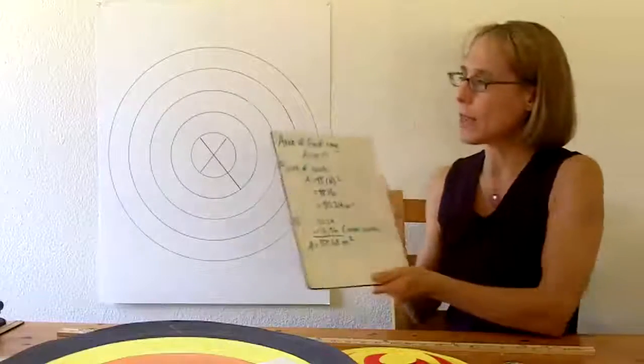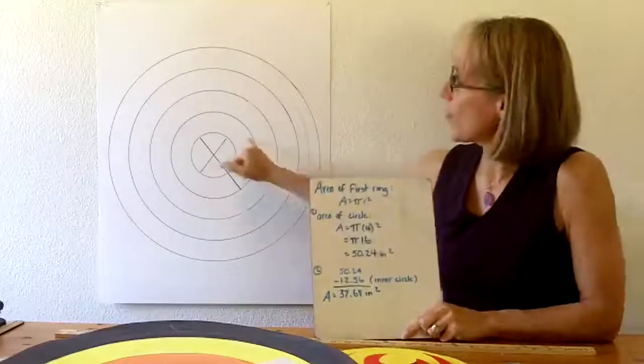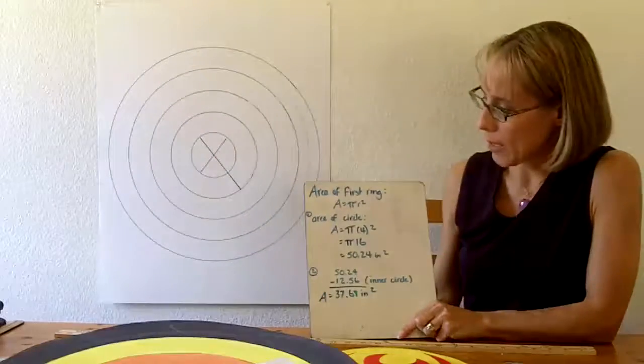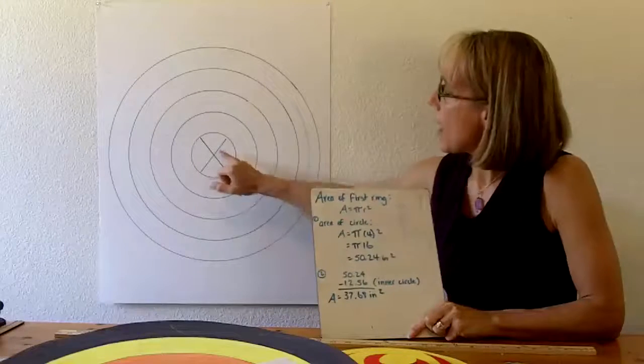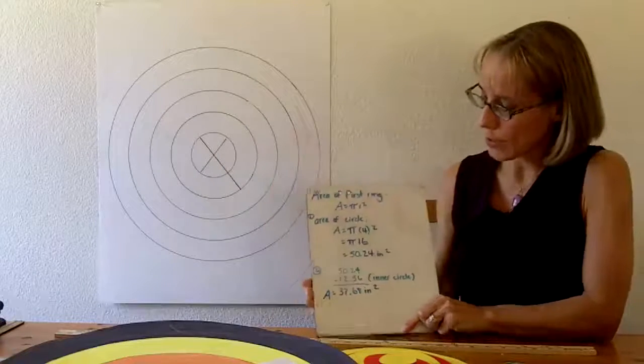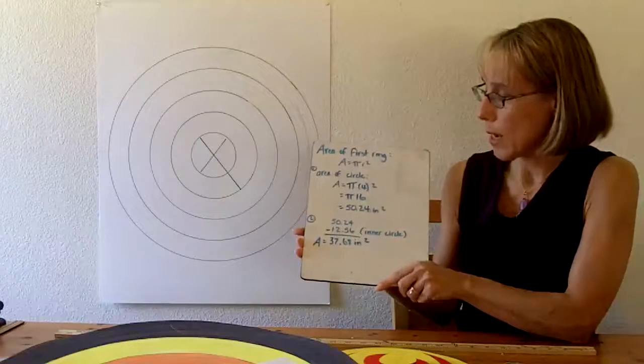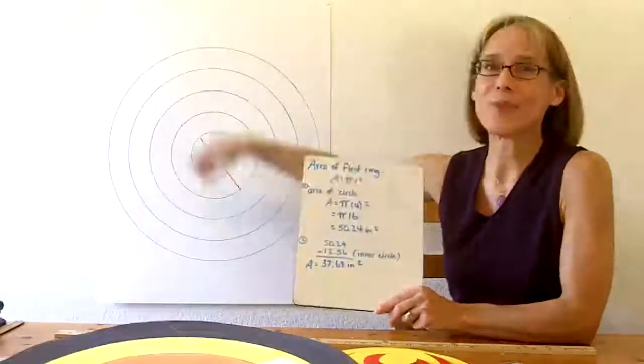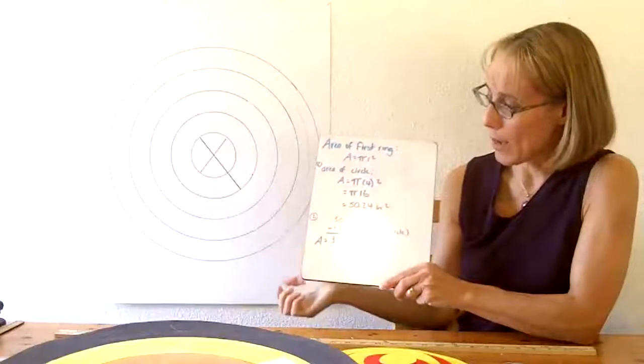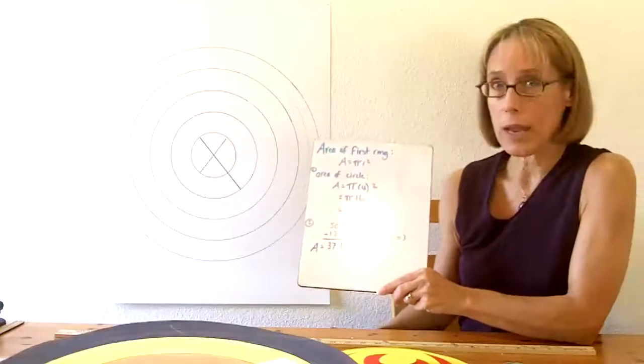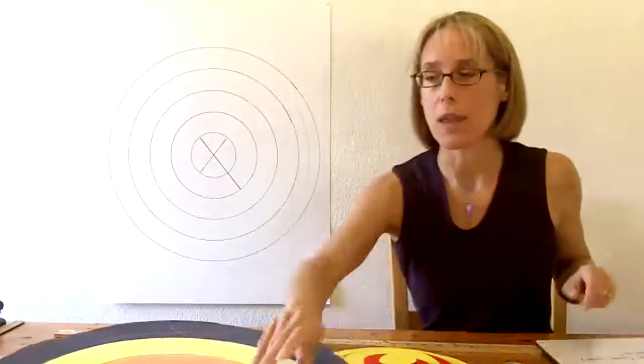Once they know how to do that, then we're going to actually do an example. We're trying to determine the area of the first ring, and we're just plugging in the numbers again. We want to find the area of the entire circle first. We know this circle has a radius of 4 inches, so we just plug it in. 4 squared is 16, pi times 16 is 50.24 square inches. Now that's the circle, it's not the ring yet. We need to remove that center. We need to remove the donut hole. So then we do a subtraction problem. 50.24 minus 12.56, and we're left with 37.68 square inches. That's what I expect students to write on that worksheet. I expect to see all of that work on there.